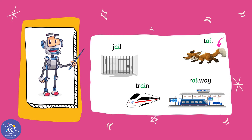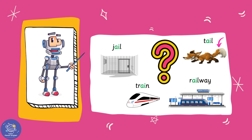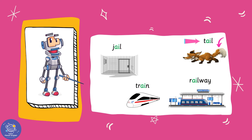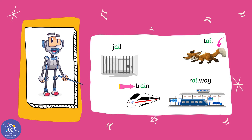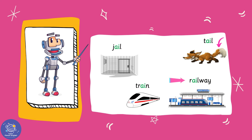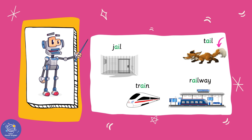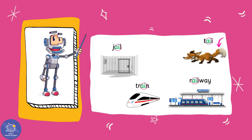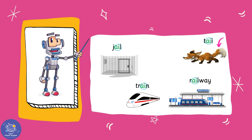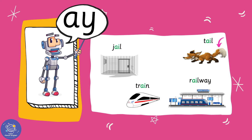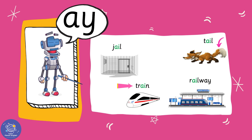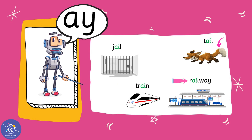What's the same about these words: jail, tail, train, and railway? That's right — they all have the letters A and I. A and I makes an 'ay' sound: jail, tail, train, railway. Well done!